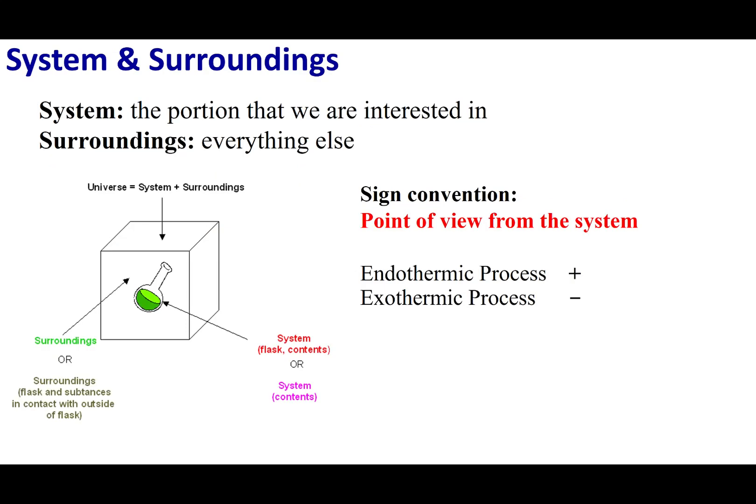Before I talk about an endo- and exothermic process, what I have to establish is system versus surrounding. This is kind of a bookkeeping method when we describe where energy is going. The system is the portion of our universe which we care about. The surrounding is everything else.